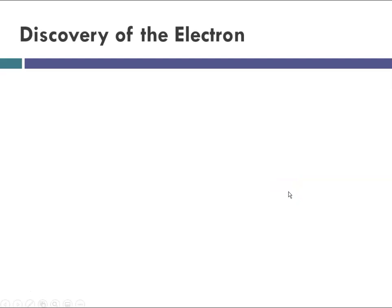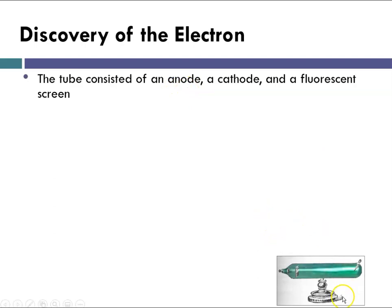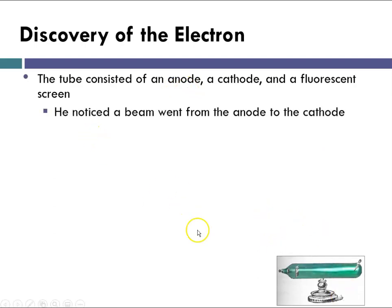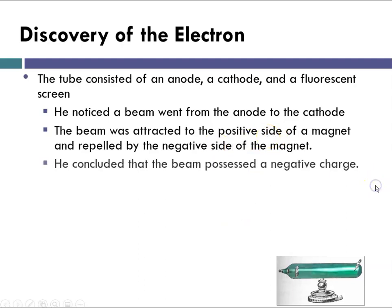Continuing with Thomson's experiment and discovery of the electron — the tube consists, as the video showed, of an anode, a cathode, and a fluorescent screen. He noticed this beam going from cathode to anode. The beam was attracted, as seen in the video, by the positive side of a magnet and repelled by the negative side. He concluded that this beam must possess a negative charge.